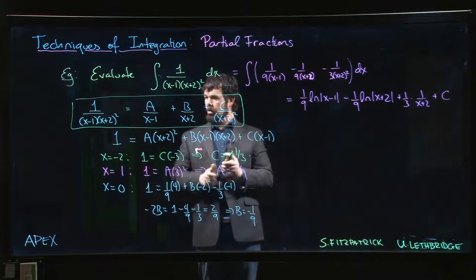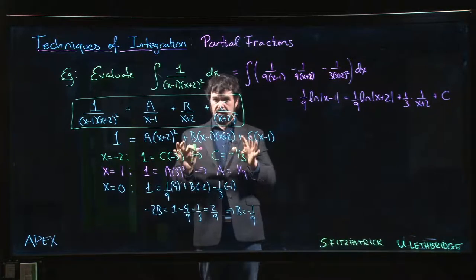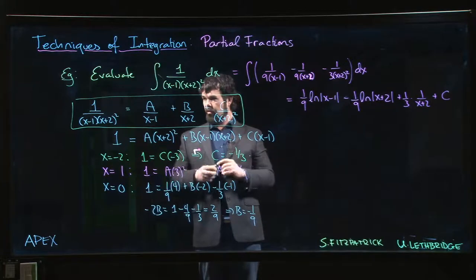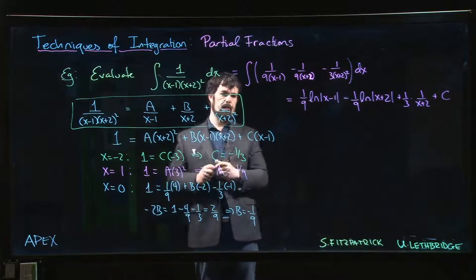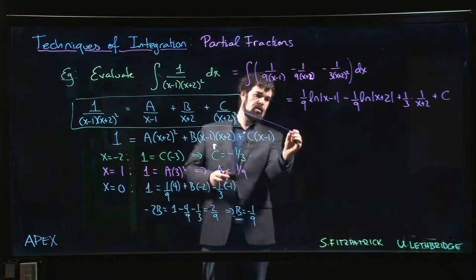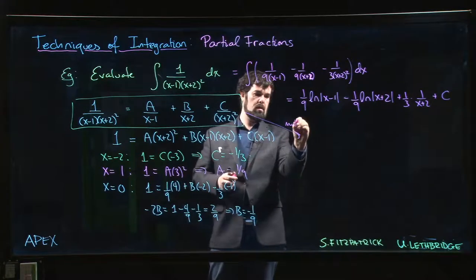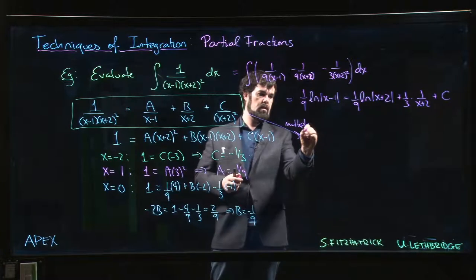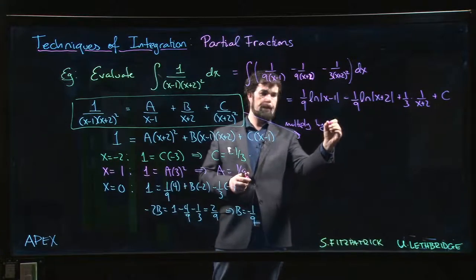What we're going to do is some careful multiplication of both sides. The first thing we're going to try is multiplying by x minus 1.